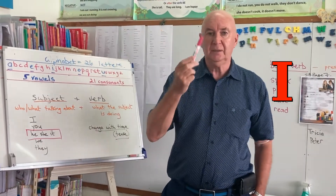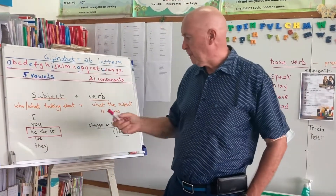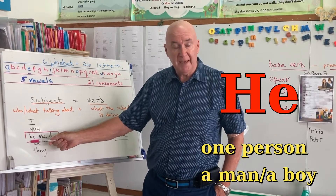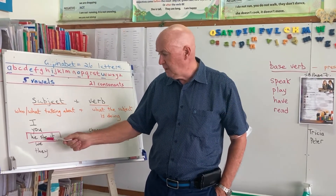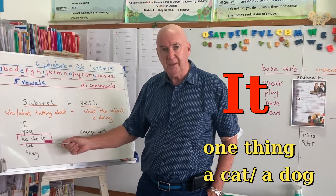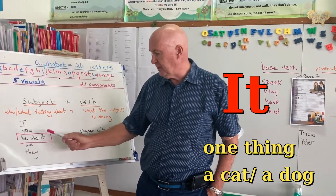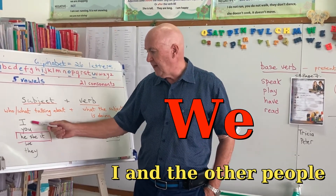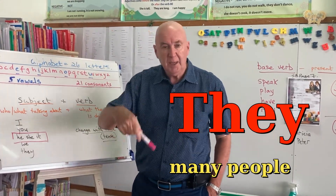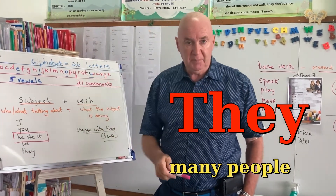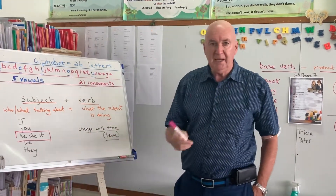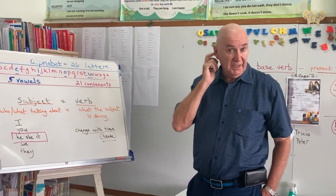The subject will be I, or you, or if we're talking about one person — a man or a boy — he; one person, a girl or a lady — she; or one thing — it. And I and other people together is we, and they means many people. Those are our subjects.